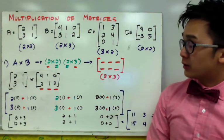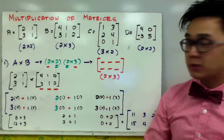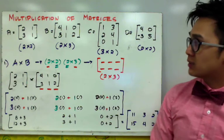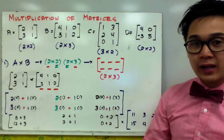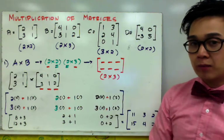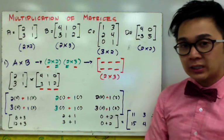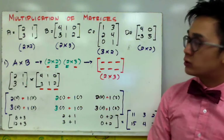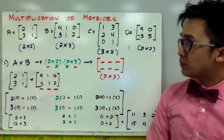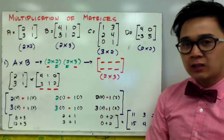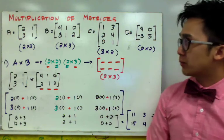Now, the difference between multiplying and addition, subtraction, and scalar multiplication is that you don't need the same order of matrix A and matrix B to be able to combine them. There's a series of steps or procedure that we need to do to be able to multiply two matrices. The steps in multiplying matrices is pretty complex compared to adding, subtracting, and even scalar multiplication.